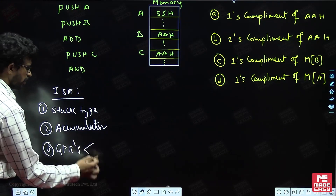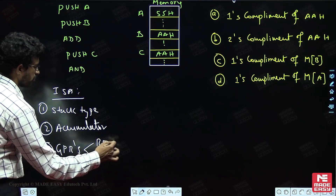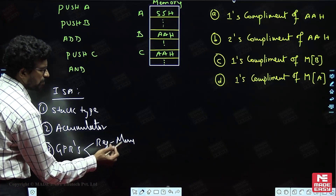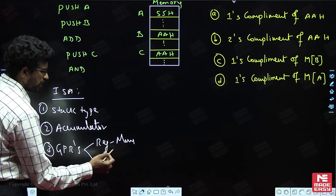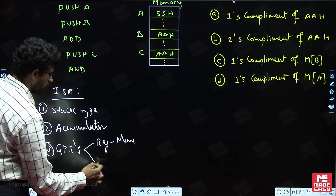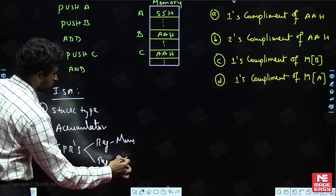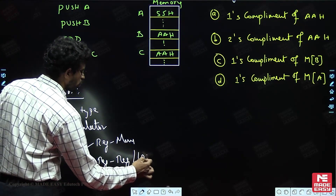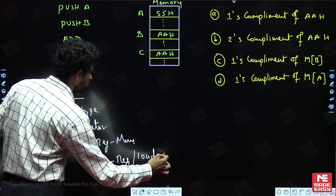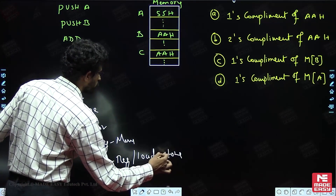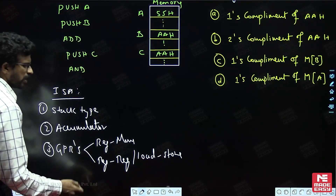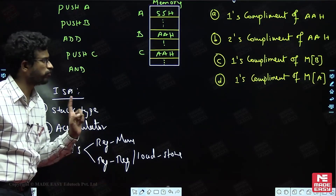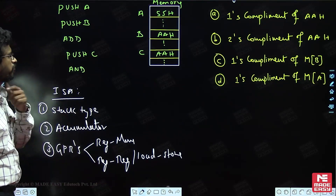In the general purpose register type, there are again two sub-types: one is register-memory, where any instruction can access memory as one operand. The other is also called load-store architecture, where only load and store instructions are used for accessing data from memory, and for all remaining ALU operations, only internal registers are used.